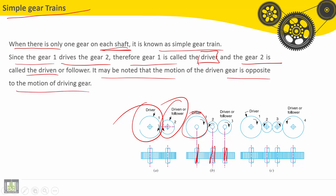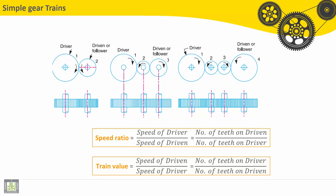It may be noted that the motion of the driven gear is opposite to the motion of the driving gear. We can see here the direction of rotation for Gear 1 is opposite the direction of rotation for Gear 2. For the calculation of gears, the most important thing is to calculate or to find out the speed ratio.